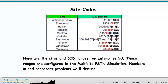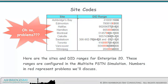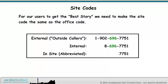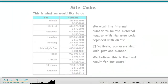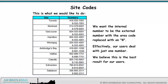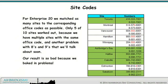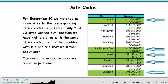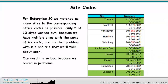Here are the sites and DID ranges for Enterprise 20. These ranges are configured in the multi-site PSTN simulation. Numbers in red represent problems we'll discuss. For our users to get the best story, we need to make the site code the same as the office code. This is what we would like to do: we want the internal number to be the external number with the area code replaced with an 8, so users deal with just one number. For Enterprise 20, we matched as many sites to the corresponding office codes as possible — only 5 out of 10 sites worked, because we have multiple sites with the same office code and another problem with 8s and 9s.